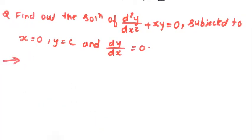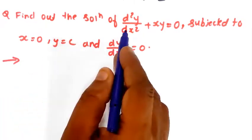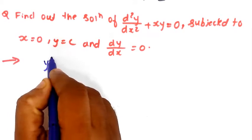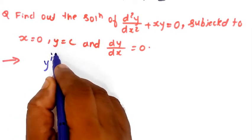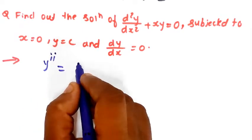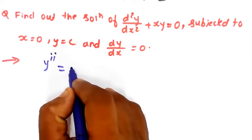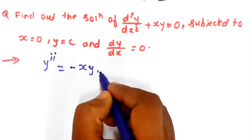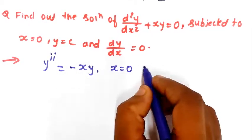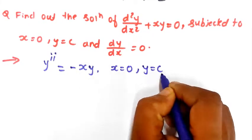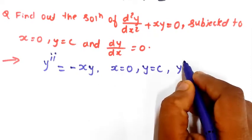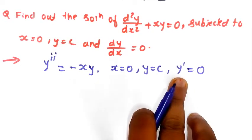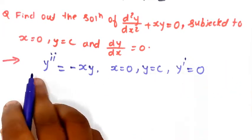Now the solution will begin. First, the given data: instead of d²y/dx², I will use the notation y double dash, or y₂, which is equal to — shifting to the right-hand side — minus xy. The initial conditions are x₀ = 0, y₀ = c, and y′₀ = 0. So the first and second derivatives are already given.